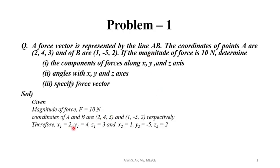So x1 will be 2, y1 will be 4, z1 is equal to 3, x2 is equal to 1, y2 will be minus 5 and z2 will be 2. Next we will find out the distance between A and B along the x axis, represented by dx. It is given by x2 minus x1, that is B coordinate minus A coordinate. That is 1 minus 2, which will be equal to minus 1.